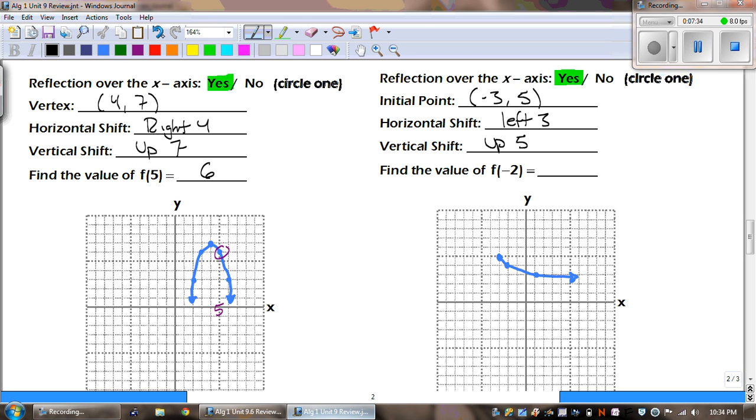And then it's asking us to find f of negative 2. So, I'm going to go to negative 2 and find my point. And that is 4.